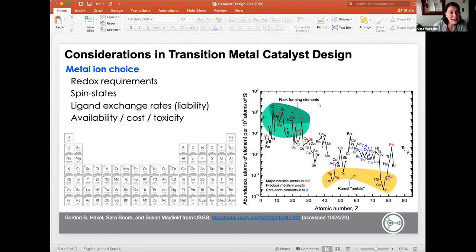But if we look at the graph on the right that really informs us of the earth abundance of different metals, you'll notice that a lot of the metals that we really like to use in the center to promote our catalysis, things like ruthenium, rhodium, palladium, platinum, those are the rarest metals available on earth. So it's not cheap. If you're working with those metals, those are not inexpensive metals to work with.